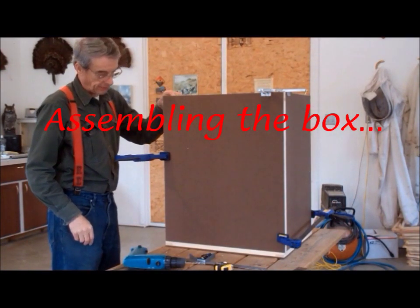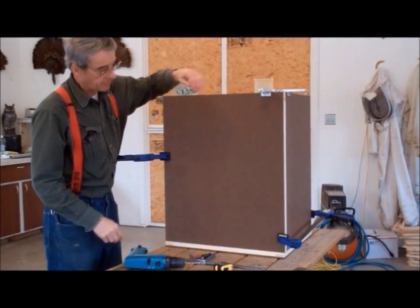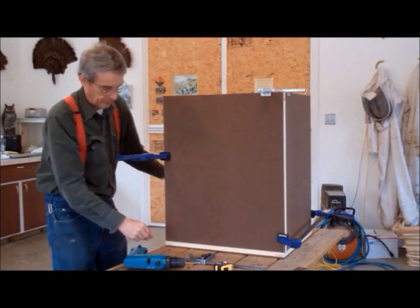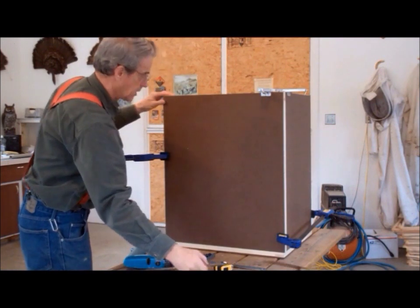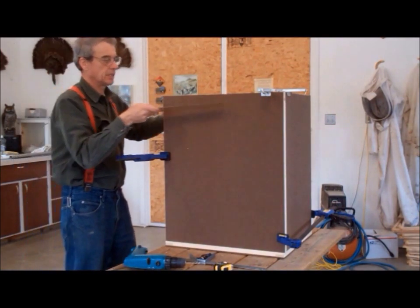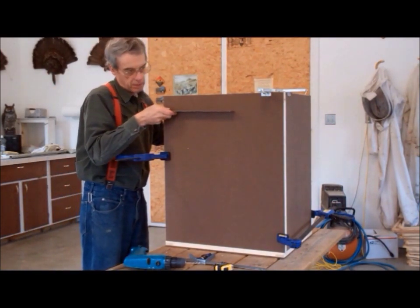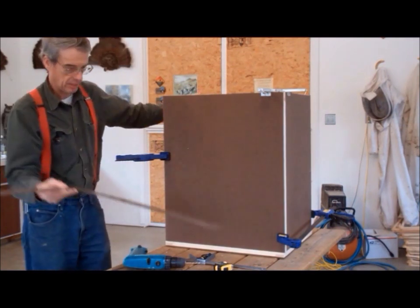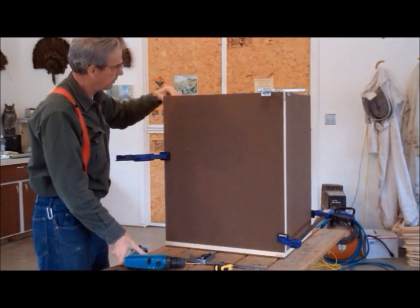Assembling the box is pretty straightforward. I set up the panels on the base using that for square. Clamp the sides. Check to make sure everything is square. And then pre-drill for the screws.